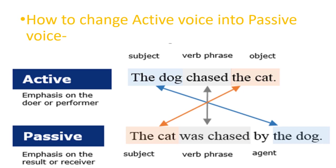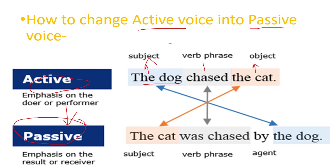Now, how to change active voice into passive voice. The sentence 'The dog chased the cat' is active voice. Here, 'the dog' is the subject, 'chased' is the verb, and 'the cat' is the object. Active voice places emphasis on the doer or performer — in this sentence, the doer was the dog. In passive voice, stress is laid on the result or the receiver.